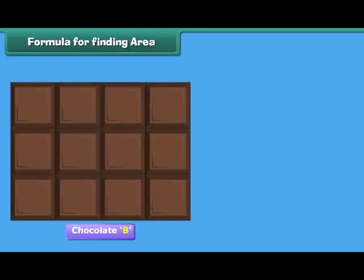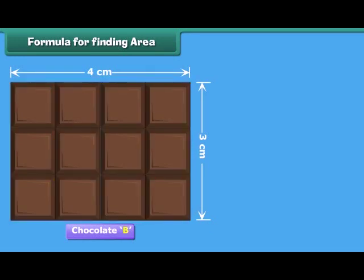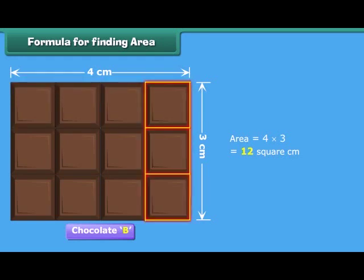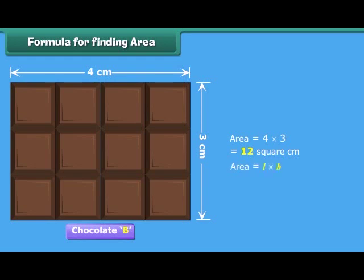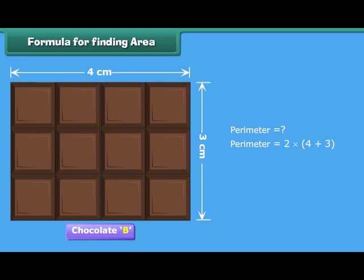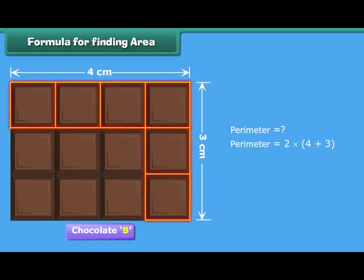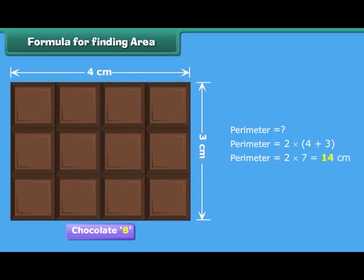We found the area of chocolate B by counting the total number of squares on it. Alternatively, we can also calculate the area just by multiplying the number of squares along the length of the chocolate with the number of squares along its width. Thus, area is equal to length multiplied by width. The perimeter will be equal to twice the sum of the squares along its length and width. Thus, perimeter of chocolate B is equal to 14 centimeters.